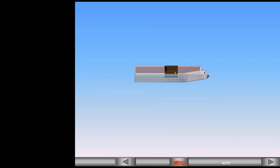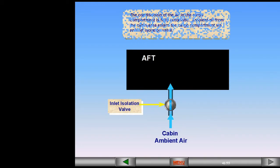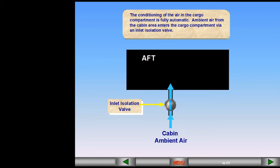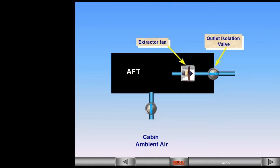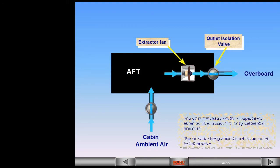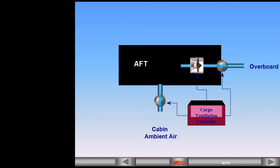The conditioning of the air in the cargo compartment is fully automatic. Ambient air from the cabin area enters the cargo compartment via an inlet isolation valve. The air is removed from the compartment either by an extractor fan or by differential pressure, and is discharged overboard via an outlet isolation valve.